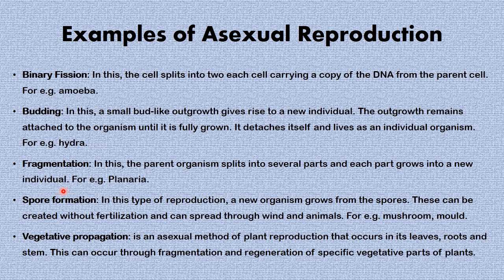In fragmentation, the parent organism splits into several parts and each part grows into a new individual — an example is the planaria worm. In spore formation, a new organism grows from spores, which can be created without fertilization and can spread through wind and animals. Examples of organisms that carry out spore formation are mushroom and mold.